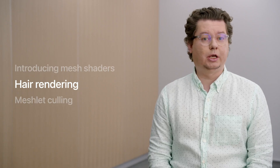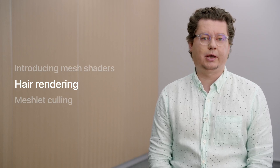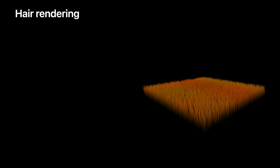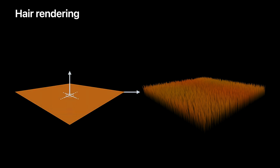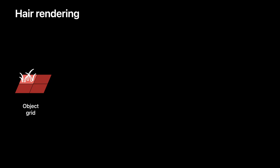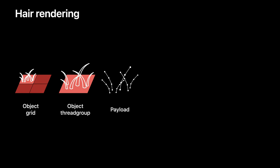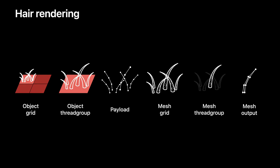The next two examples will cover the relation between objects and meshes. The first is using mesh shaders to implement hair rendering. To simplify this, I'll use a simple plane instead of the bunny model. To generate a patch of hair, I'll divide the input geometry into tiles, where each tile calculates a level of detail and the number of strands it needs to produce, then generates individual strands of hair. Each object thread group generates the curve control points for each strand — this becomes the payload. The object thread group then launches a mesh grid, where each mesh thread group represents a single strand of hair, and outputs the mesh to the rasterizer.